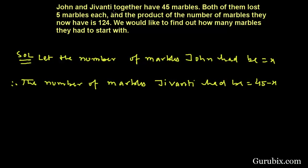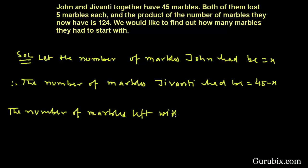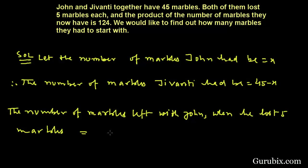The next condition of the statement is: both of them lost five marbles each. Therefore, the number of marbles left with John when he lost five marbles would be x minus 5, because initially he had x marbles and he lost five, leaving him with x minus 5 marbles.